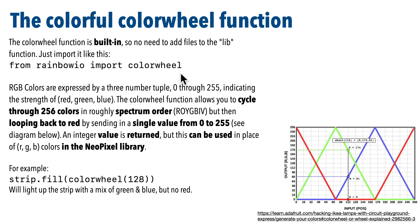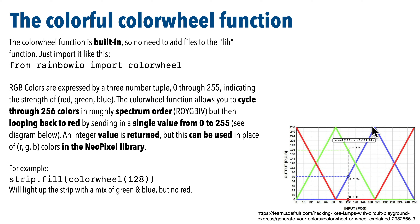Color wheel takes an integer from 0 to 255, and this graph shows how the color output works. The bottom axis is the number you pass in. Pass in 0 and you get 255 red, but no blue or green. Pass in 85 and you get full 255 green, but no red or blue. Pass in 128 and you get a mix of half blue and half green, but no red. This value here is where violet is in the rainbow spectrum, then we loop back to red. So going from 0 to 255 and restarting at 0 gives a smooth transition throughout the entire rainbow, elegantly transitioning back to red.